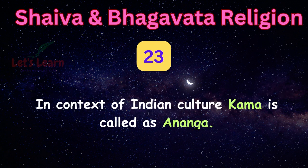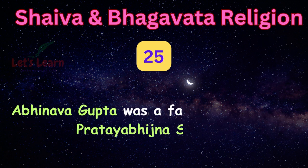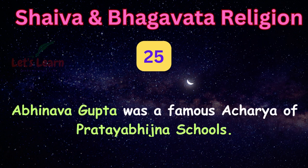In the context of Indian culture, Kama is called as Ananga. Kashmir Shaivism believes in Monism. Abhinava Gupta was a famous Acharya of the Pratyabhijna school.